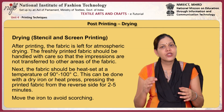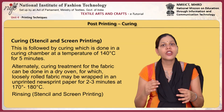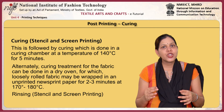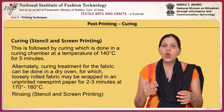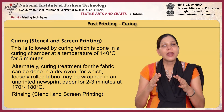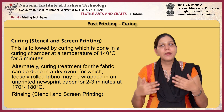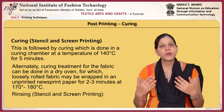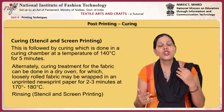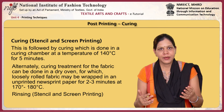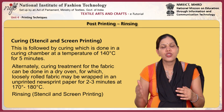Move the iron to avoid scorching. This is followed by curing, which is done in a curing chamber at a temperature of 140 degrees Celsius for 5 minutes. Alternatively, curing can be done in a dry oven with loosely rolled fabric wrapped in unprinted newsprint paper for 2 to 3 minutes at 170 to 180 degrees Celsius. If required, this may be followed by rinsing the fabric in a neutral detergent.